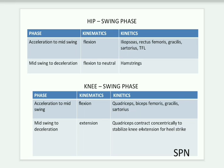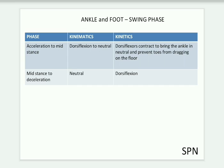In swing phase for hip: acceleration to mid swing — kinematics is flexion; muscles are iliopsoas, rectus femoris, gracilis, sartorius, and tensor fasciae latae. Mid swing to deceleration: flexion to neutral; hamstrings are active. For knee in swing phase: acceleration to mid swing — movement is flexion; muscles are quadriceps, biceps femoris, gracilis, and sartorius. Mid swing to deceleration: kinematics is extension; quadriceps contract concentrically to stabilize knee extension for heel strike.